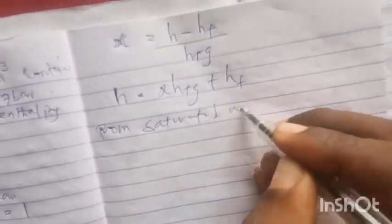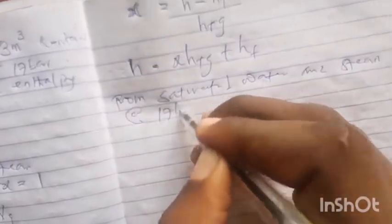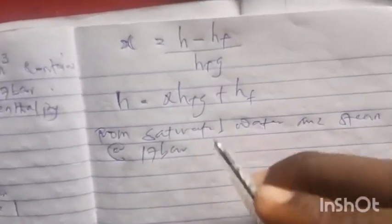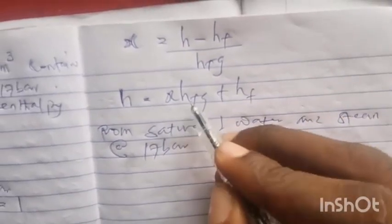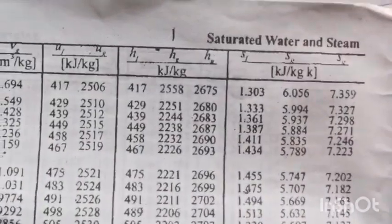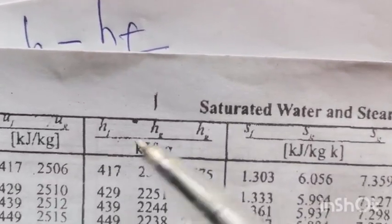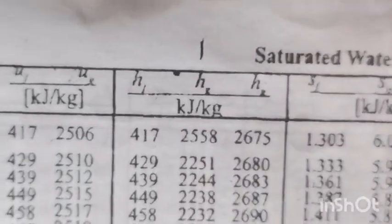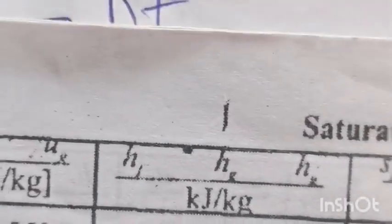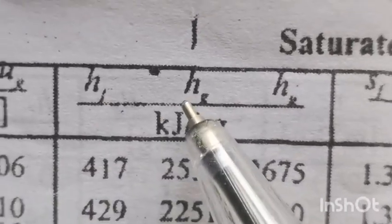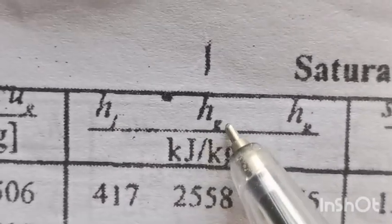From the saturated water and steam table corresponding to 17 bar, we need to pick out hfg and hg. Looking through the specific enthalpy column in the steam table: this column is hf (specific enthalpy at the fluid), this middle column is hfg (enthalpy between fluid and gas), and this is hg (specific enthalpy at the gas).